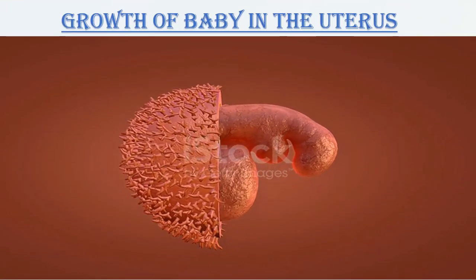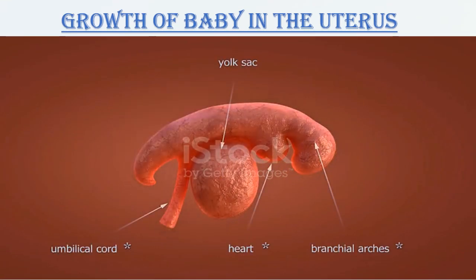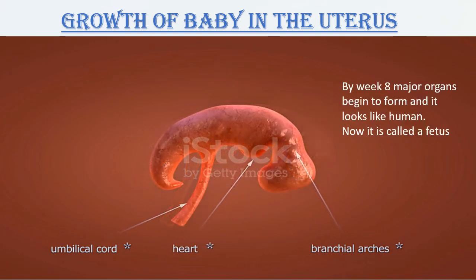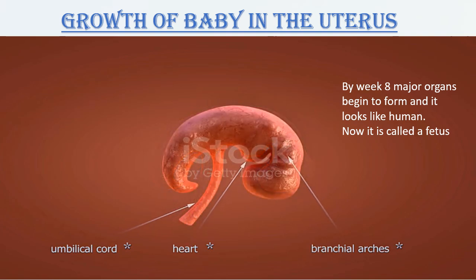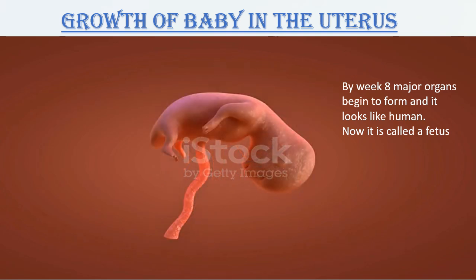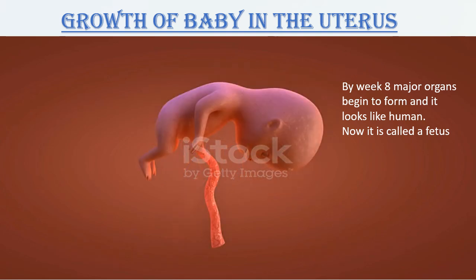After the embryo is formed, week by week the baby grows. By week eight, organs begin to form and it looks like a human. Now it is called the fetus. So the stages are: a single cell called the zygote, then many cells called the embryo, and then by week eight — when the organs have begun to form — we call it the fetus.